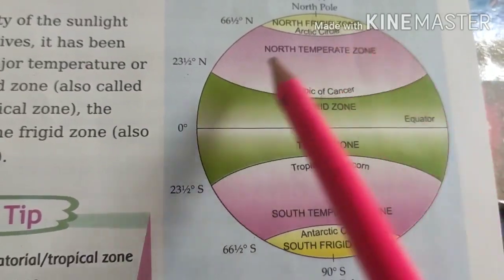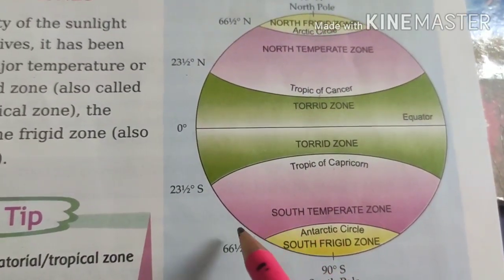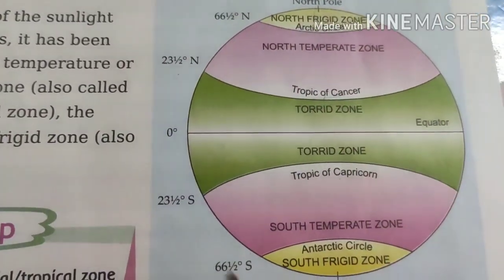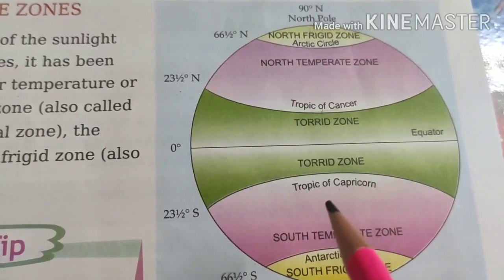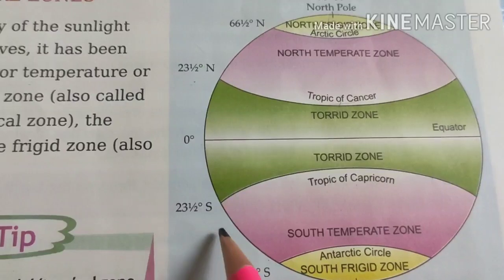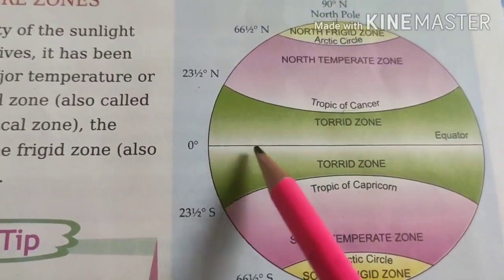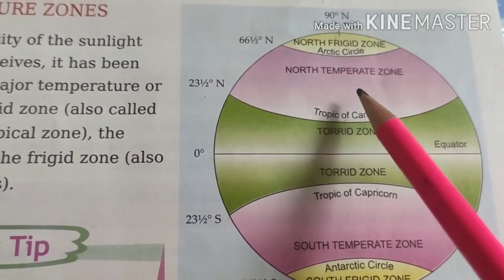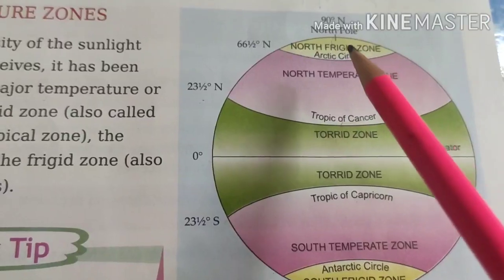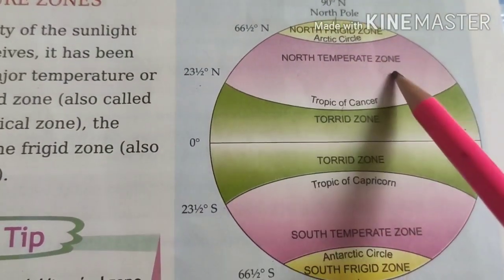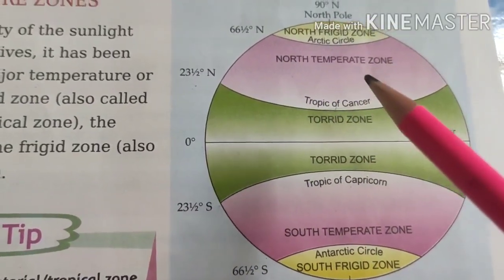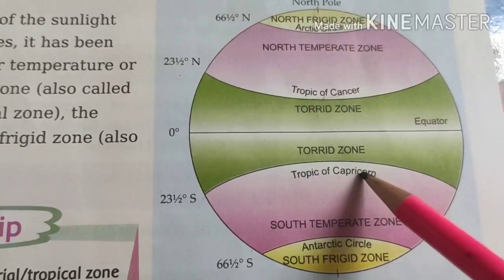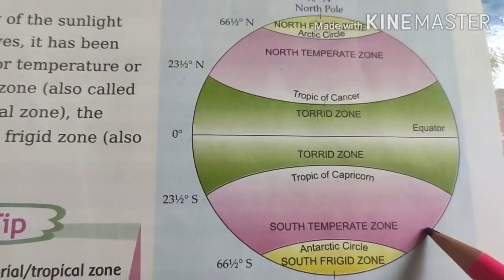All these latitudes are parallel with each other. Now, about the heat zones — based on how the sun falls on each area — the torrid zone is divided from 23 and a half degree north to 23 and a half degree south. Above the torrid zone in the northern hemisphere, from the Tropic of Cancer to the Arctic Circle, is the North Temperate Zone. From the Tropic of Capricorn to the Antarctic Circle is the Southern Temperate Zone.